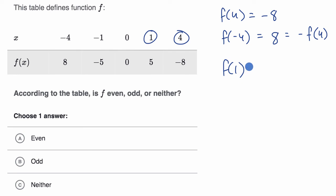But now let's try the other points just to make sure. f of one is equal to five. What is f of negative one? It is equal to negative five. Once again, f of negative x is equal to the negative of f of x, so that checks out.